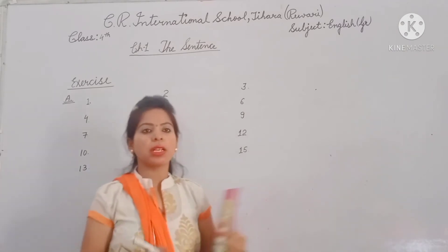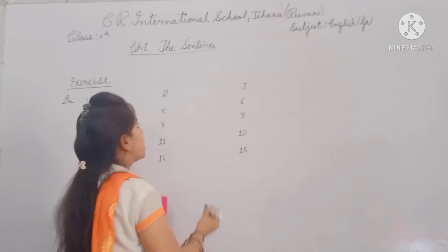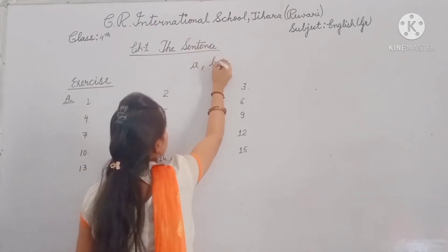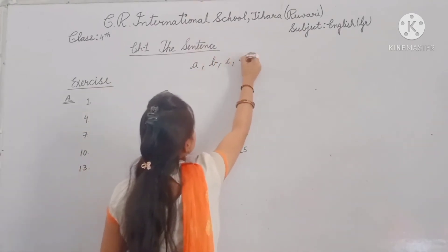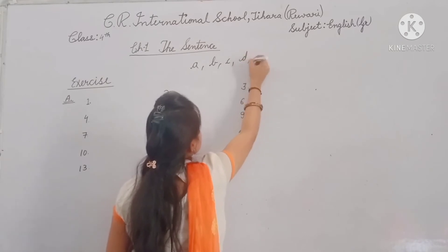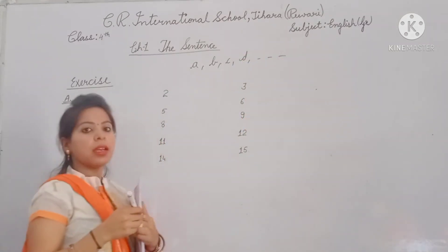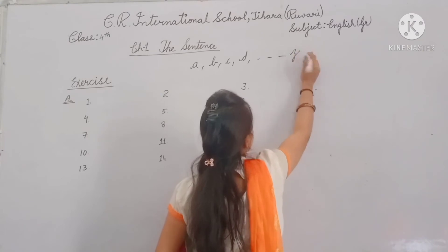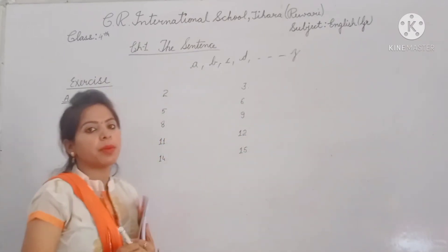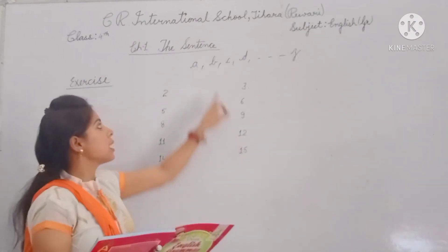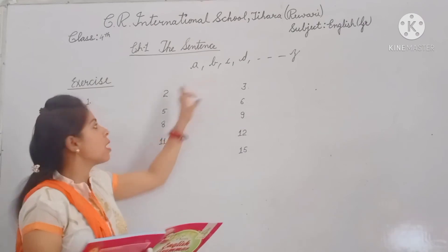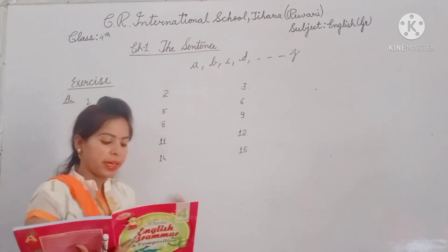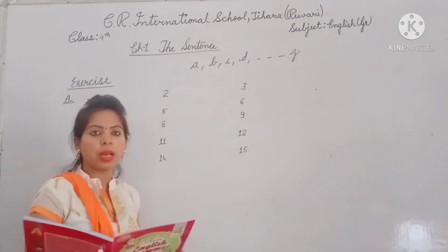Do you know the alphabetical order? A, B, C — A to Z. That is the alphabetical order, that series. We have our words in the box and we will arrange them in alphabetical order.